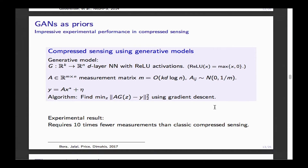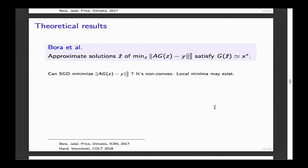They prove that all solutions of this minimization problem are approximately close to the planted solution. They can't guarantee which Z maps to the solution since the generative model may not be injective, but they show G of the minimizer is close to the planted signal. However, they don't guarantee that gradient descent solves the problem — there may be bad local minima or critical points.